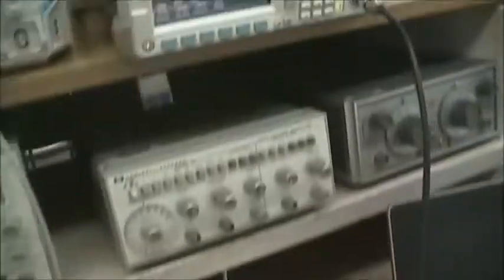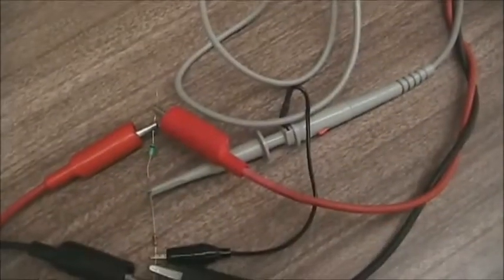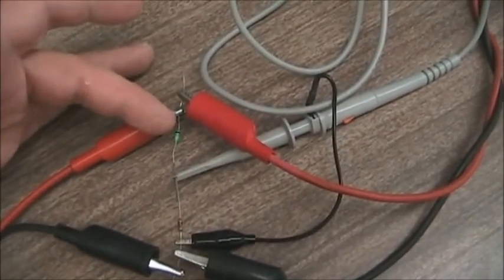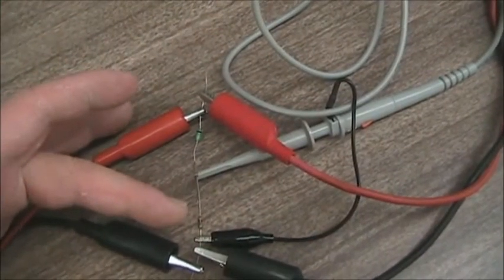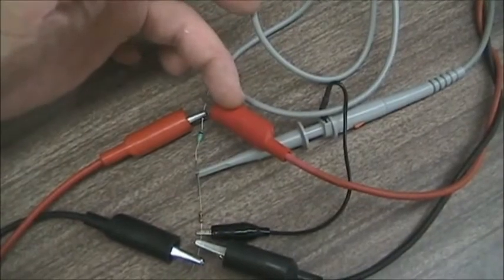So here is the lab setup. It is very simple. We have a generator, we have the scope, and we have the circuit. In the circuit we see the L, this is 47 microhenry, and the R, which is 300 ohms.